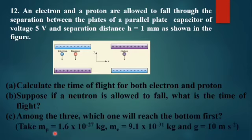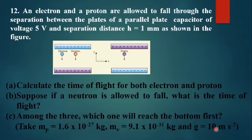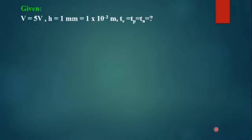The mass of the proton is equal to 1.6 × 10⁻²⁷ kg, mass of electron is 9.1 × 10⁻³¹ kg, and g is equal to 10 m/s². The given potential V is equal to 5 V and distance h is equal to 1 mm.